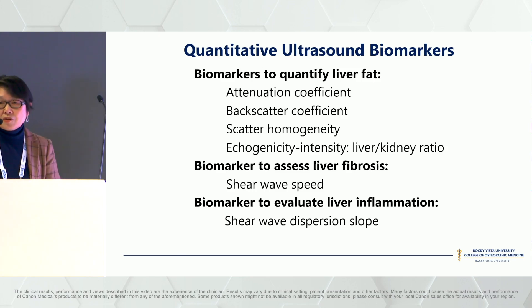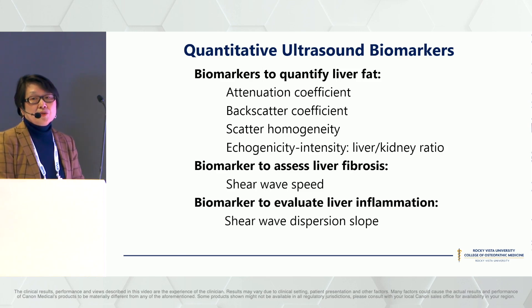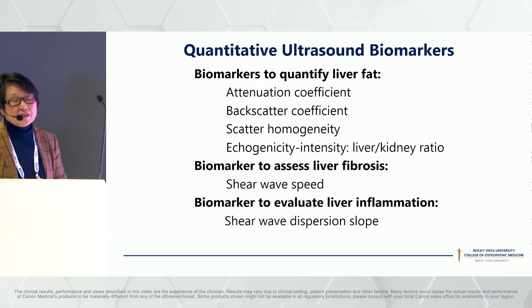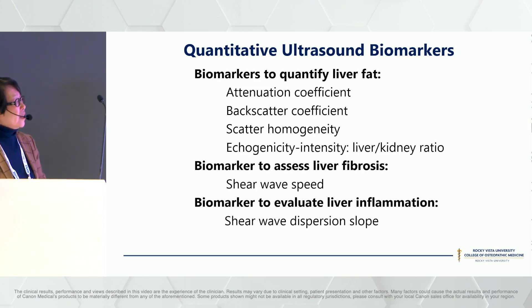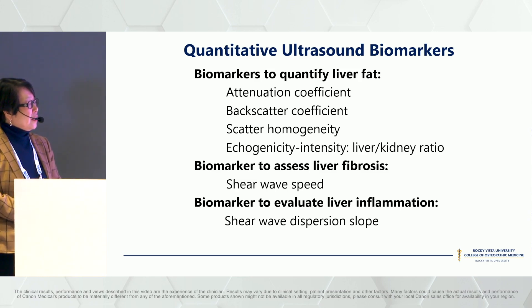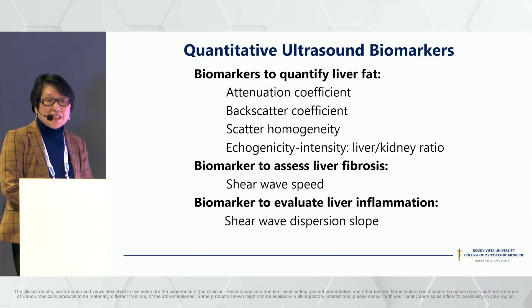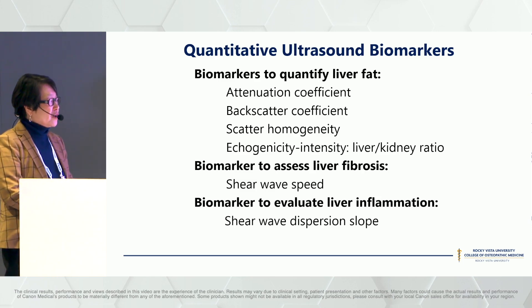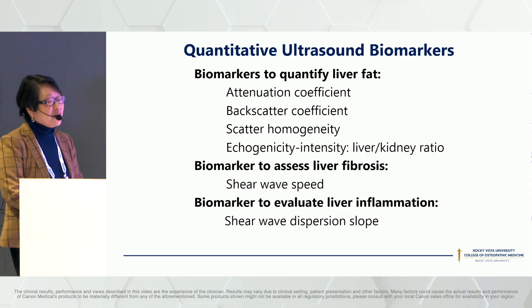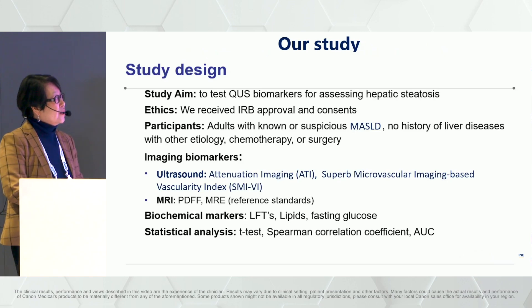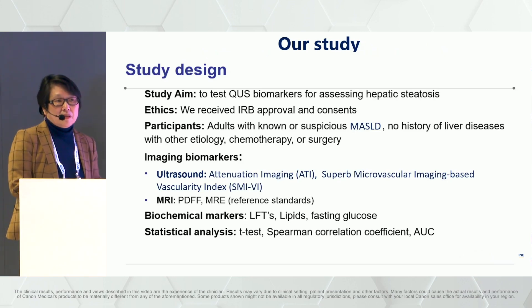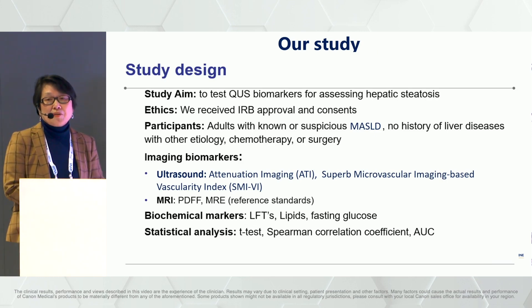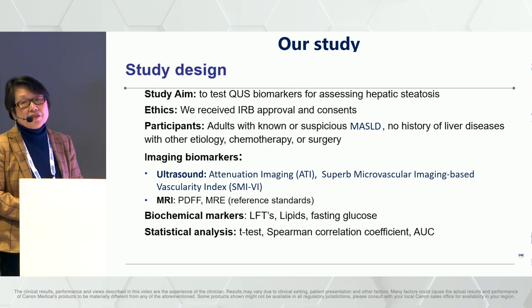Therefore, quantitative ultrasound biomarkers have been developed to assess liver pathologies, not only steatosis. Attenuation coefficient, backscatter coefficient, scatter homogeneity, and echogenicity intensity ratio for liver to kidney can quantify liver fat. Shear wave speed can be used to assess liver stiffness associated with liver fibrosis. Shear wave dispersion slope can be used to evaluate liver inflammation. These quantitative ultrasound biomarkers are now available commercially on different ultrasound scanners from different vendors.